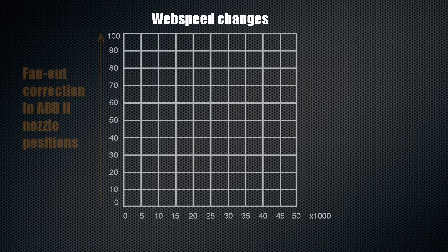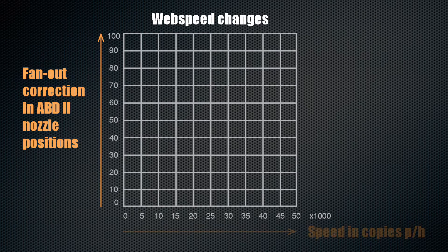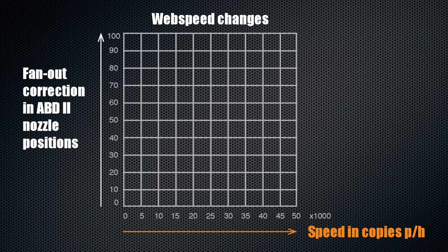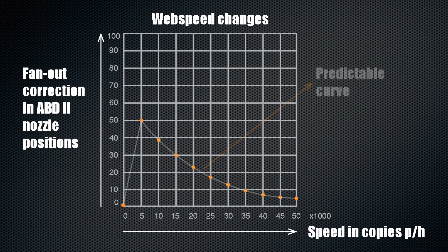The behavior of fan-out during web speed changes is characterized by curves, which can be predicted. This knowledge is used to correct fan-out errors automatically during web speed changes.